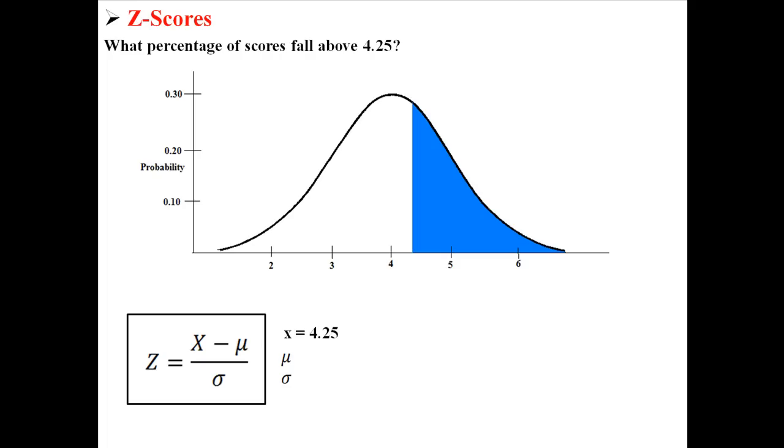In this case, x is 4.25, because that's what I'm asking you about. What percentage of scores fall above that? And the population mean is 4. You can tell that from looking on the graph. 4 falls within the center. And you can also tell that the standard deviation is 1, because that's the distance between each standard deviation from the mean. So I can put all those things together and calculate a z. Just 4.25 minus 4 divided by 1. And we end up with the z-score of 0.25.